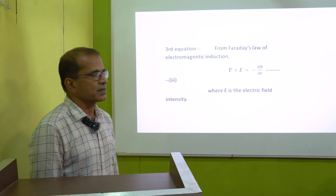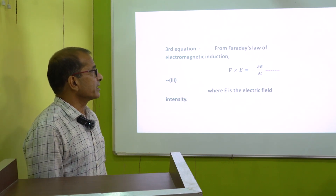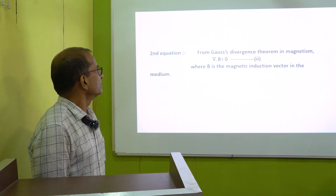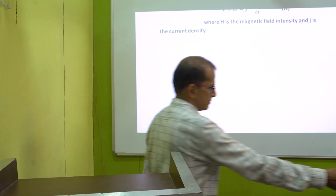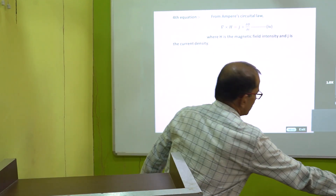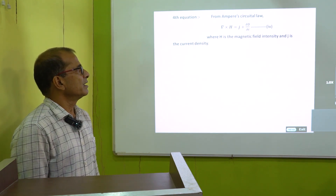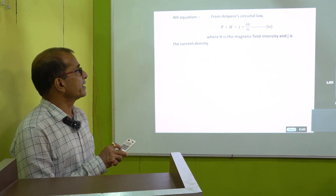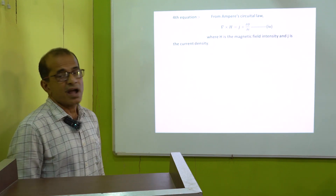The third equation is curl of E equal to minus ∂B/∂t, where E is the electric field intensity and we get it from Faraday's law in electromagnetic induction. The fourth equation is curl of H equal to J plus ∂D/∂t, where H is the magnetic field intensity, J is the current density, and D is the electric displacement vector. We get it from Ampere's circuital law.